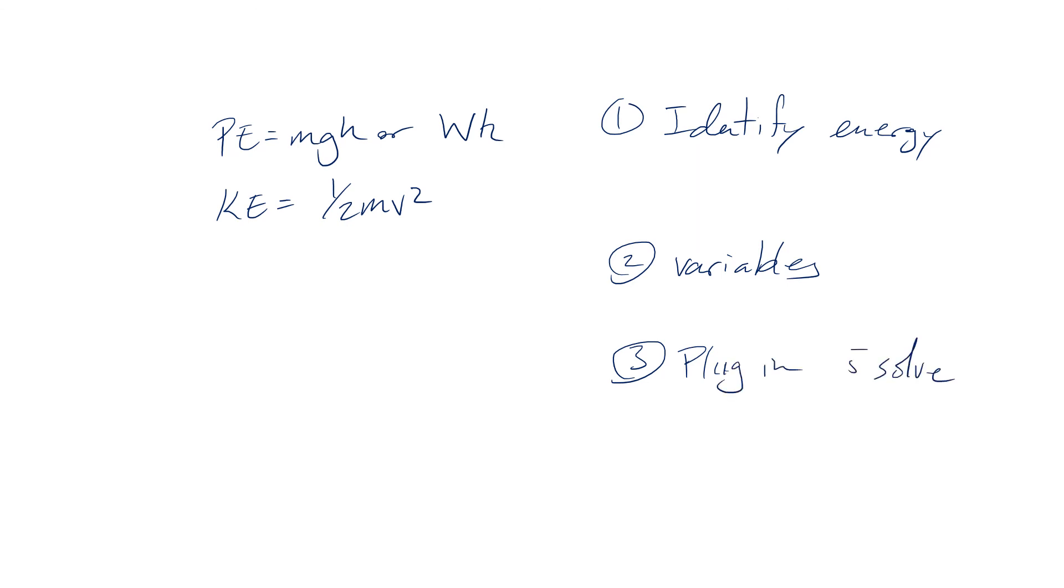So there you go. Thank you very much for watching. Again the big takeaways for this lesson is potential energy is equal to mgh or weight times h and that kinetic energy is equal to one half mv squared. And to solve it usually I do three steps or you should do three steps. First identify the type of energy. Identify the energy and subsequently the equation. Number two check out the variables. And then finally plug in and solve. Hey thank you guys for watching.